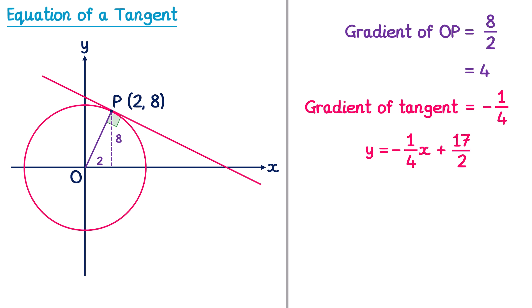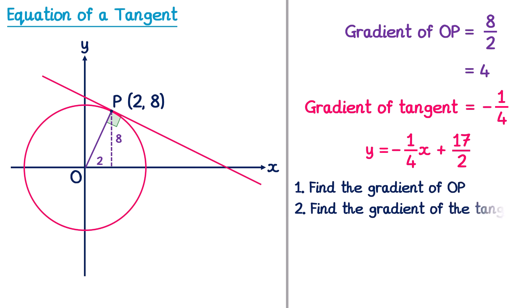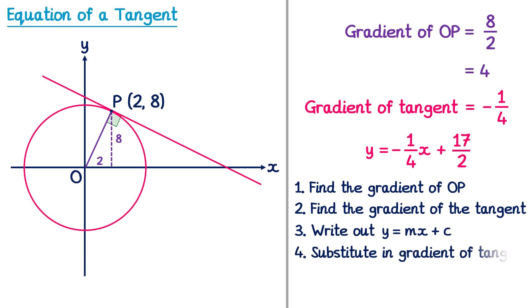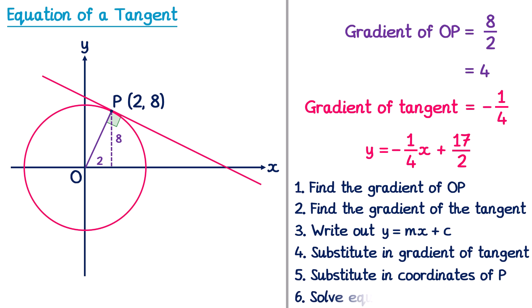Let's just summarise the steps of what we did. First, we drew in the line from O to P and found the gradient of that line OP. We then used this gradient to find the gradient of the tangent. We then wrote out the equation of a line Y equals MX plus C, substituted in the value for the gradient — in our case negative one quarter — then substituted in the coordinates for point P, and solved the resulting equation to find the value of C.